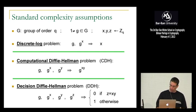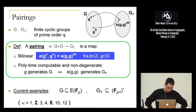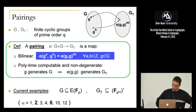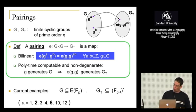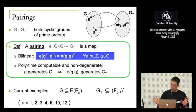Pairings — a pairing is basically a map from a source group G, where discrete log and CDH are hard, to some other group which we call G_T, the target group. The pairing takes two points in G and maps them into G_T. Both groups are finite cyclic groups of prime order Q.